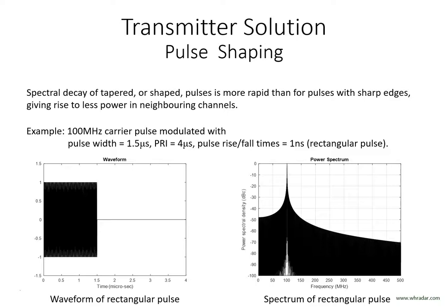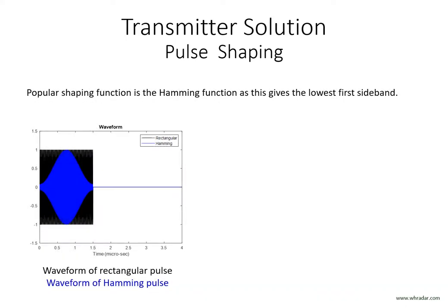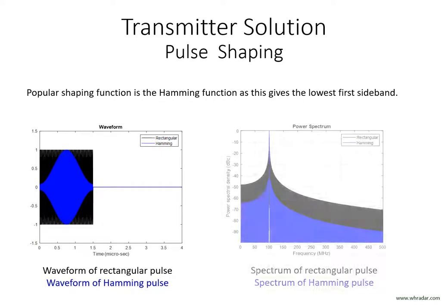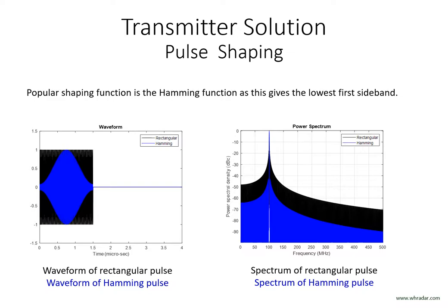A popular shaping function is the Hamming function. The left hand plot shows the original rectangular pulses in black, overlaid by a Hamming shaped pulse in blue. The Hamming shape is akin to a cosine function sitting on top of a small pedestal. The spectrum of the Hamming shaped pulses is shown on the right in blue, with the black spectrum of the rectangular pulses also shown for comparison. The Hamming function has a very low first sideband at minus 42 dBc. The sidebands continue to decay away slowly with increasing frequency offset and reach approximately minus 68 dBc at 160 MHz.